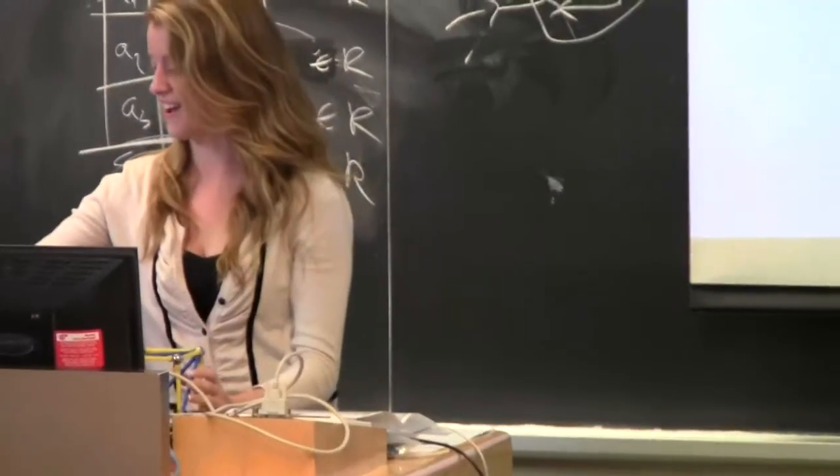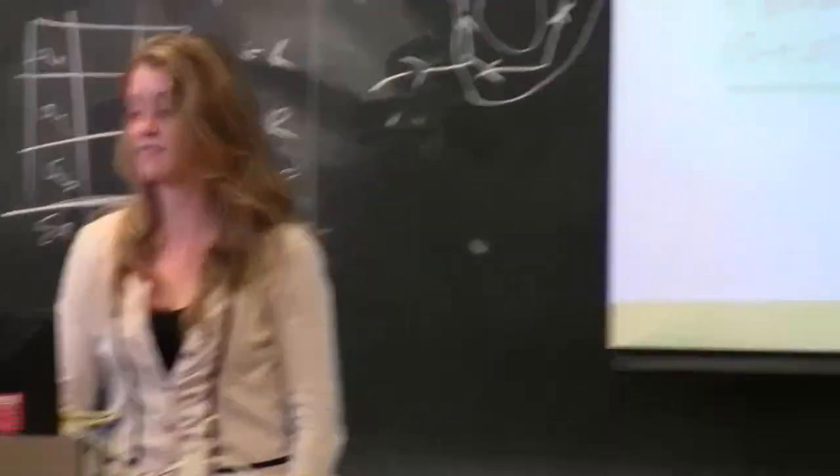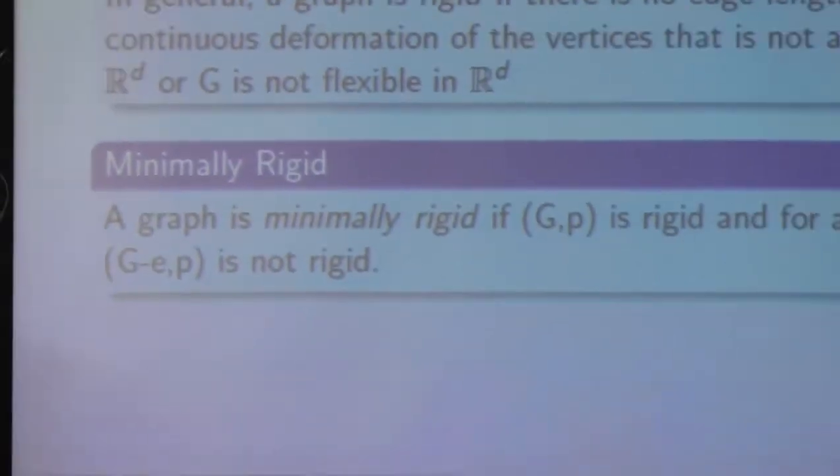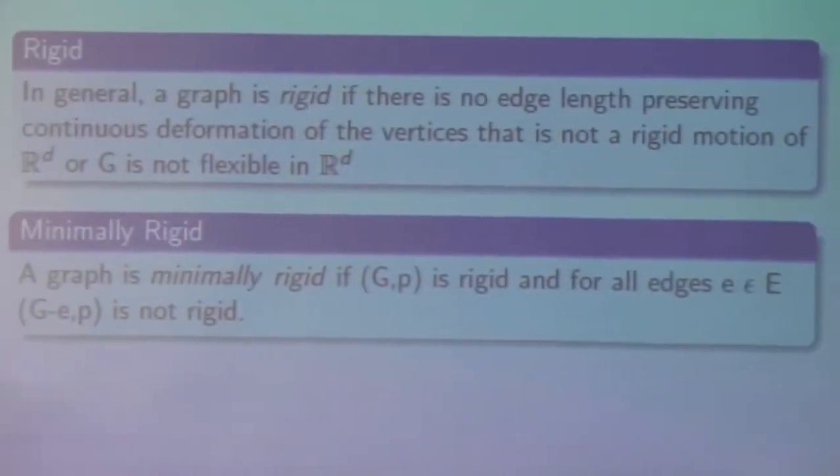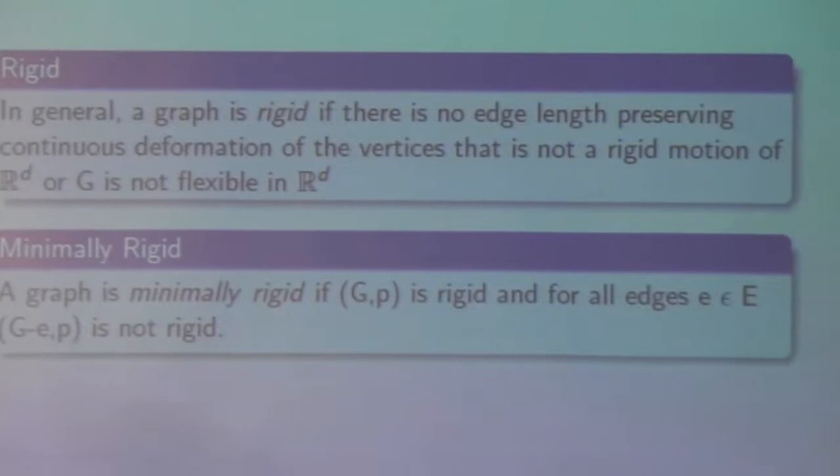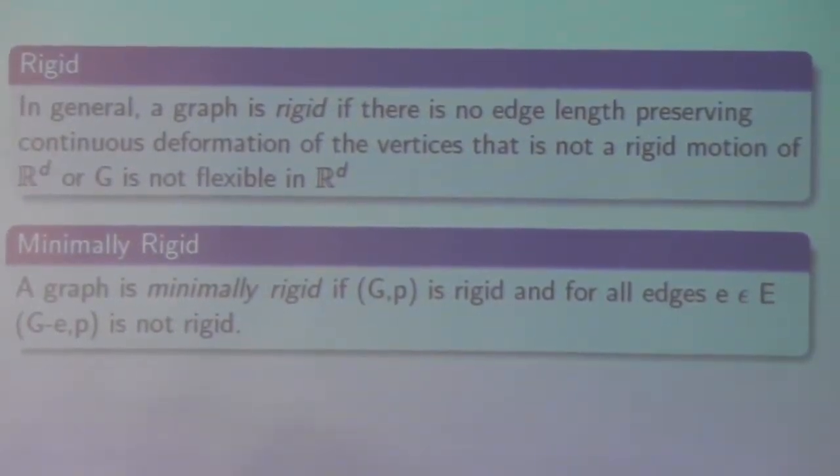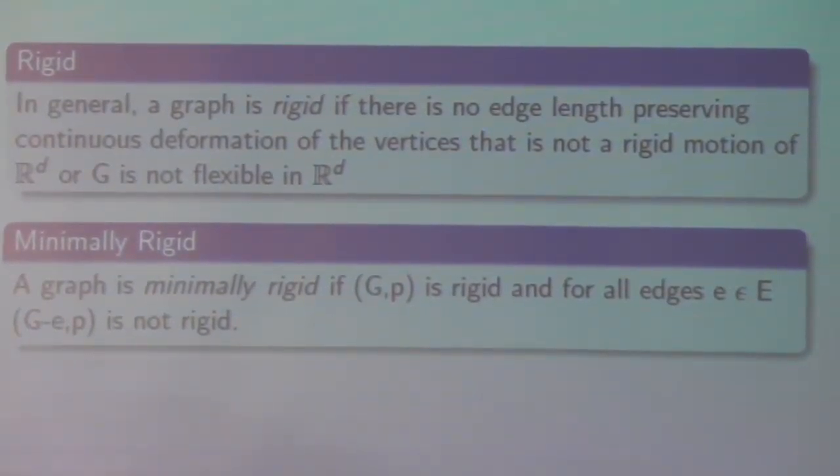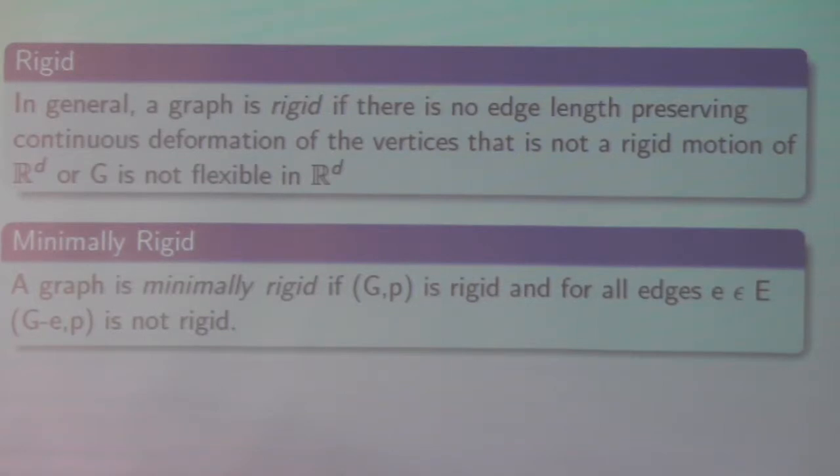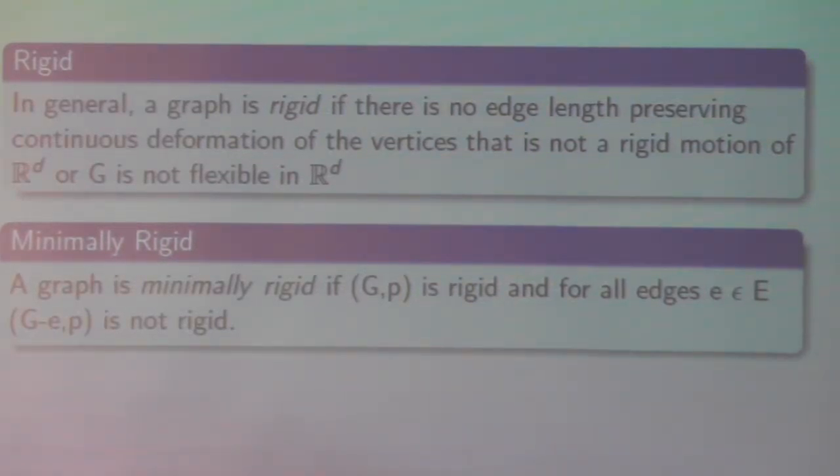As well, I'm going to define a graph as minimally rigid. If the graph is rigid and you remove any edge of the graph, it becomes a non-rigid graph. So for example, if I remove this edge here, you can move this so it's no longer a rigid graph. Or if I remove an edge from the inside structure, you can deform it this way, kind of bend it like that.